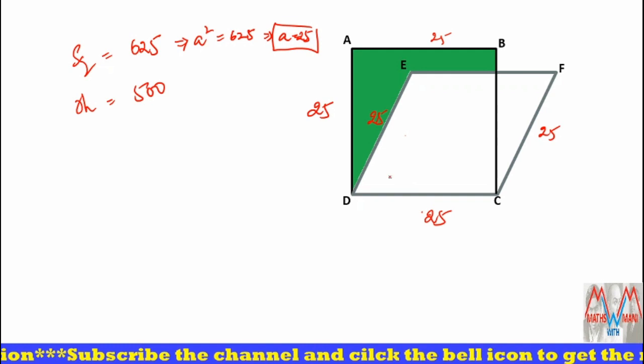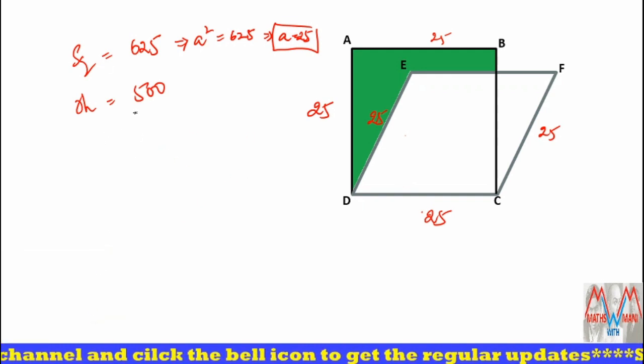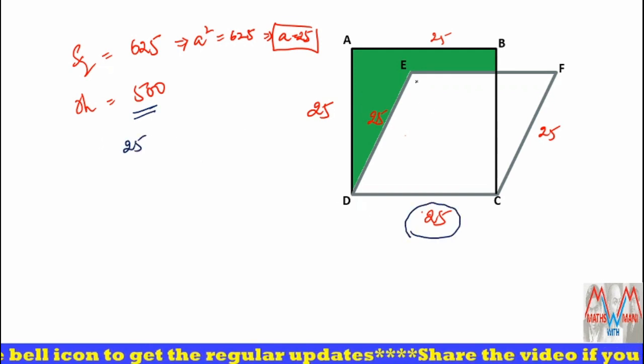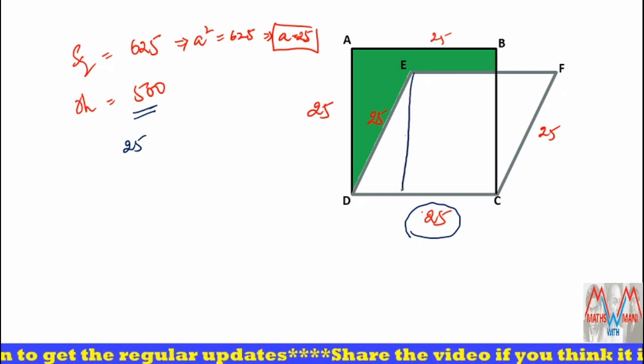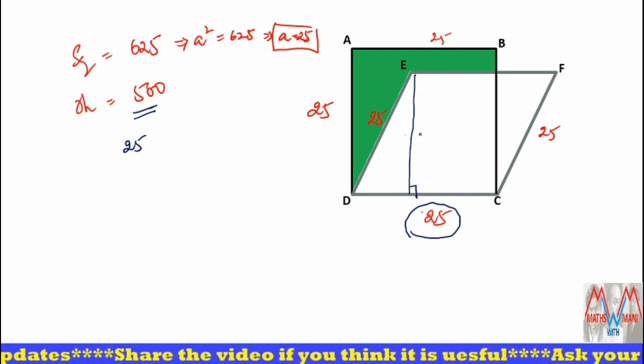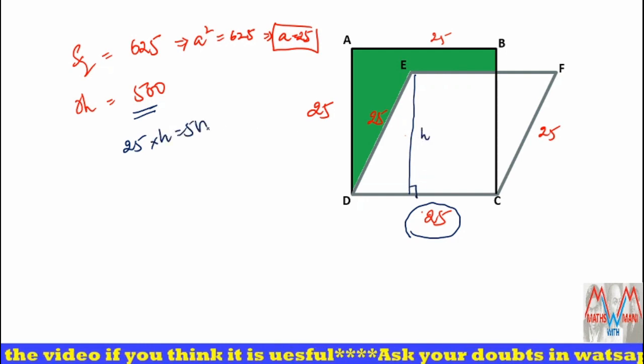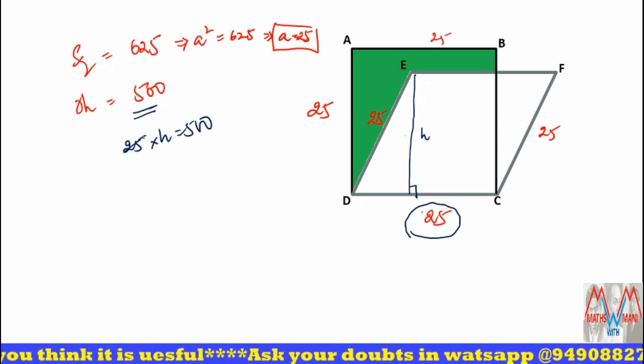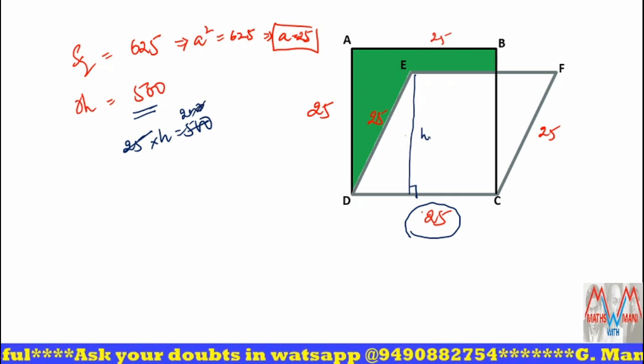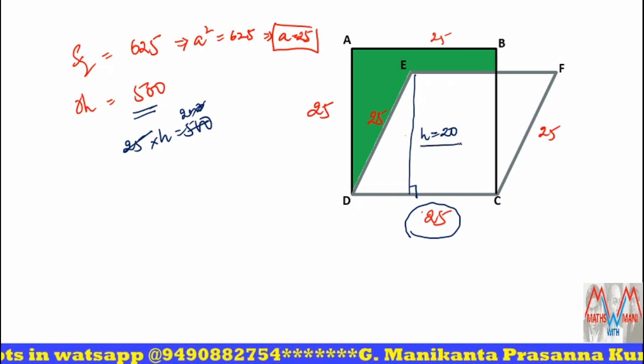Next, what about the area of the rhombus? What is the formula for area of the rhombus? It is equal to base into height. Base is 25 and the height, this is the height of the rhombus, it is given as h. So 25 into h is equal to 500, that is the area of the rhombus. So what is the value of h? H is equal to 20.